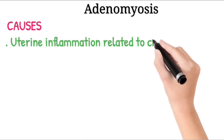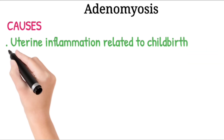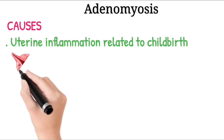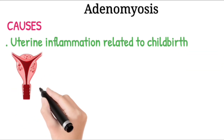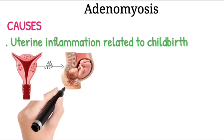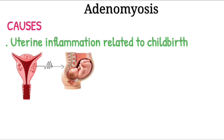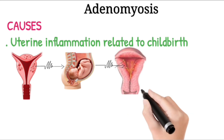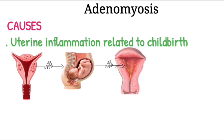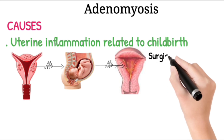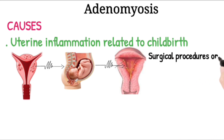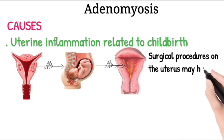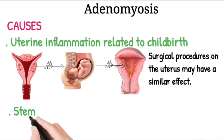Uterine Inflammation Related to Childbirth. Another theory suggests a link between adenomyosis and childbirth. An inflammation of the uterine lining during the postpartum period might cause a break in the normal boundary of cells that line the uterus. Surgical procedures on the uterus may have a similar effect.